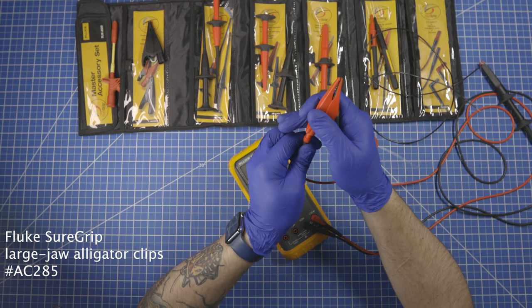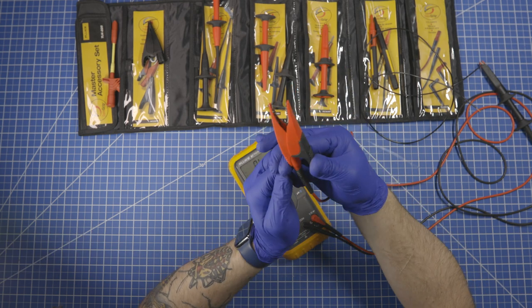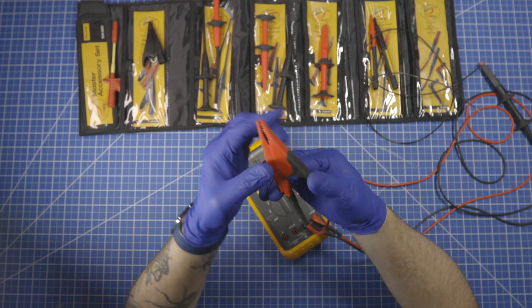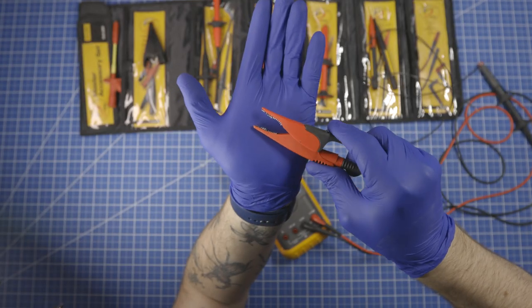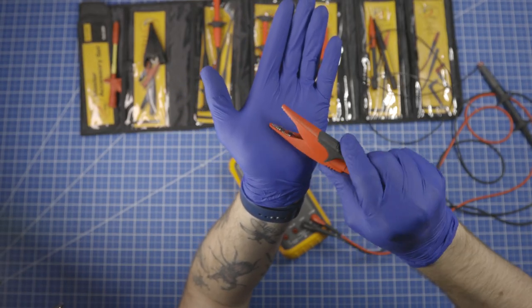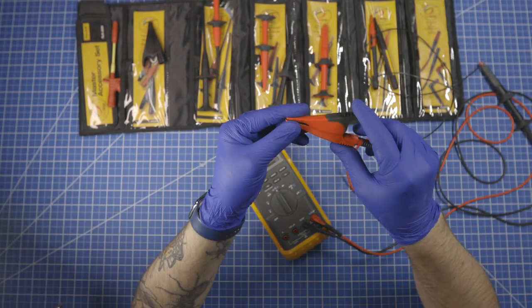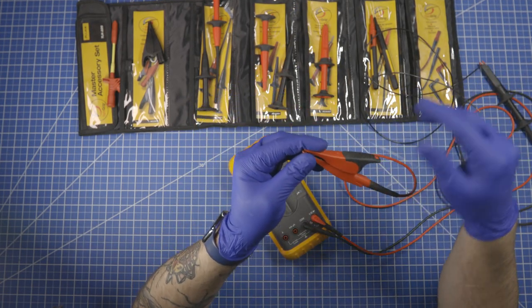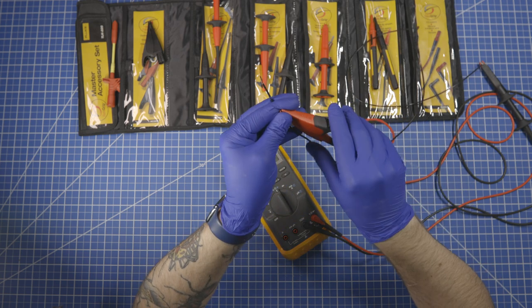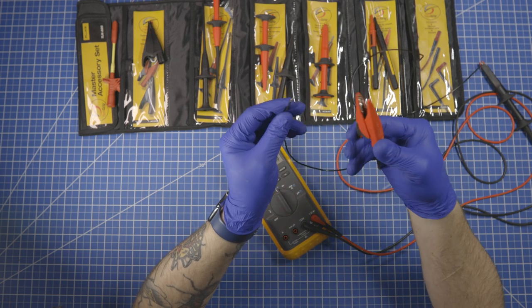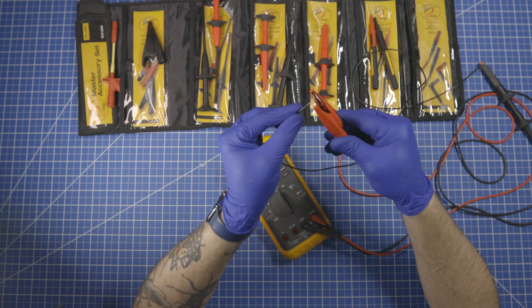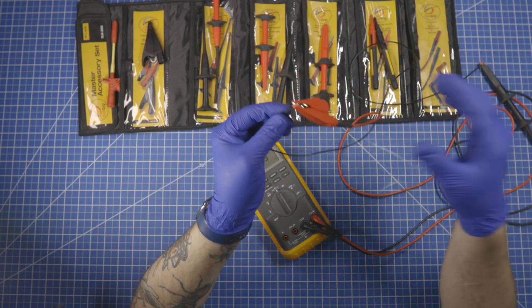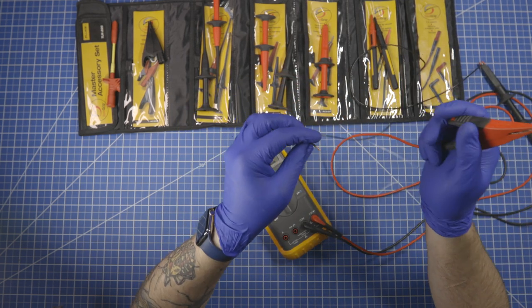These are the little bit heavier duty guys. These are just the big alligator clips. Very aggressive tooth pattern on those. And these would obviously be for hanging on to sturdier things. Battery terminals, larger gauge wires, things like that. But of course they do work just fine for smaller gauge things like the end of a wire.